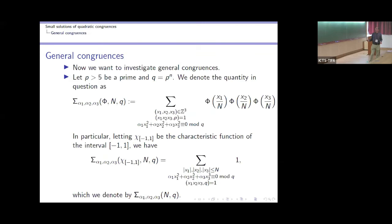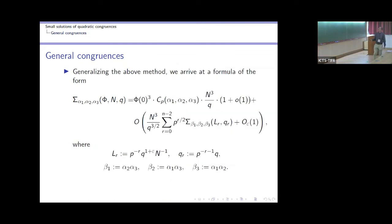We get a bound which is dominated by the main term if N is at least basically the square root of the modulus. In this case we get an asymptotic formula. Things become more complicated in the general case but work along the same lines. For the general diagonal form, we define the corresponding quantity with sharp cutoff summation — instead of smooth functions we take the characteristic function of the interval [-N, N].